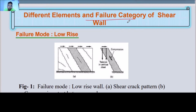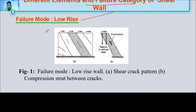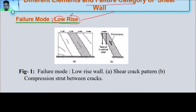First of all, we have two failure modes: low-rise building and high-rise building. Low-rise building is basically a 1 to 5 story building. High-rise building is associated with shear wall, and this shear wall is related to a failure mode.